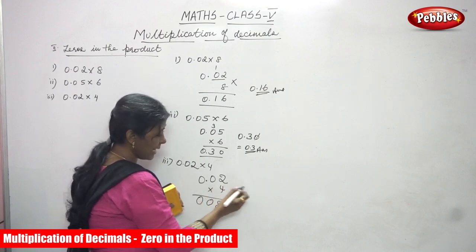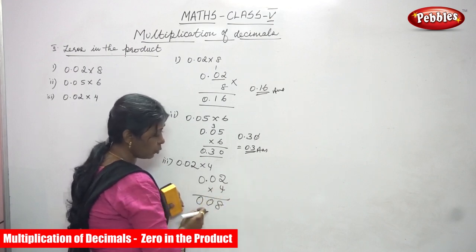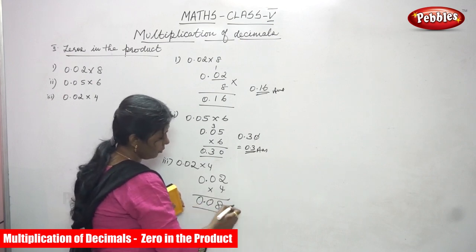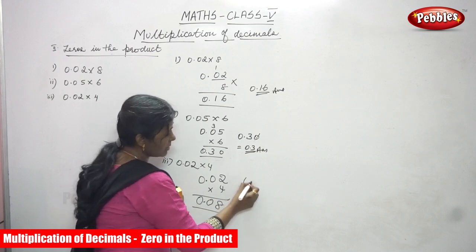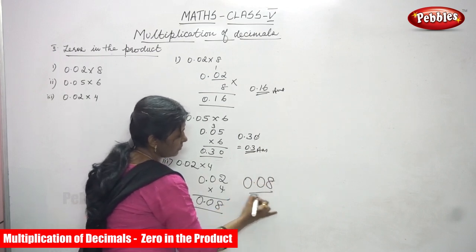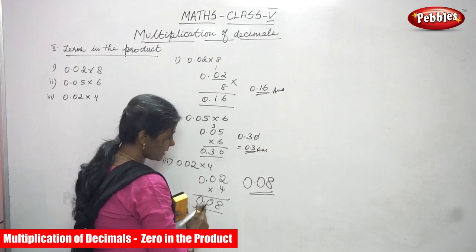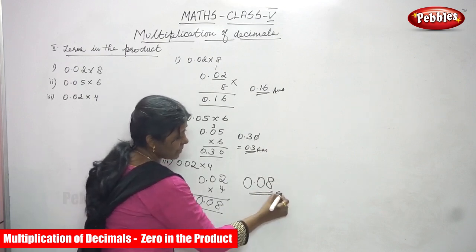So after the last 2 digits we have to move from the last 2 digits from what? Right to left side. So from this side only. So the answer is 0.08. In the product we have zeros. So what is the answer? 0.08 is the answer.